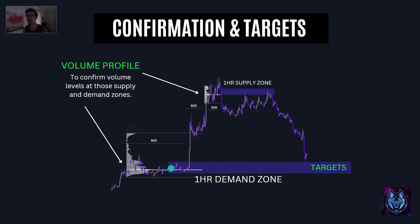Step three: lower timeframe supply and demand zones. On the five-minute timeframe, price taps into our four-hour demand zone but we don't enter right then. We wait for another break in structure. We see a break in structure to the upside from a momentum candle. We take the last bearish candle before that momentum push, mark it out, and that becomes our confirmation entry.